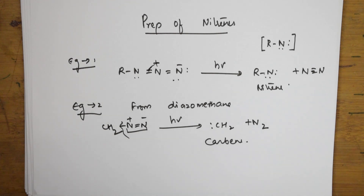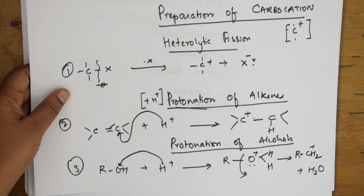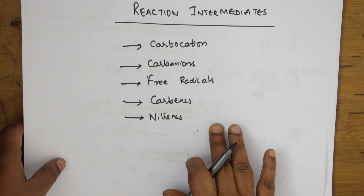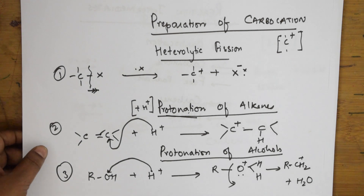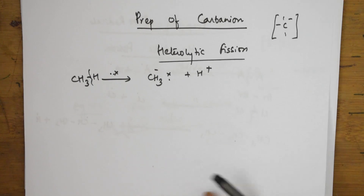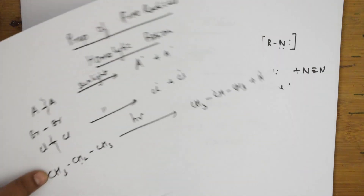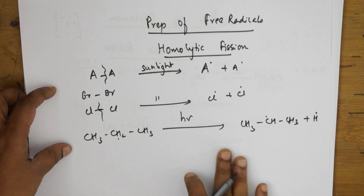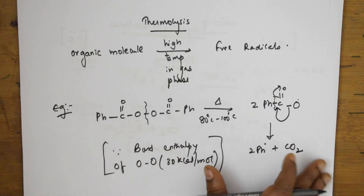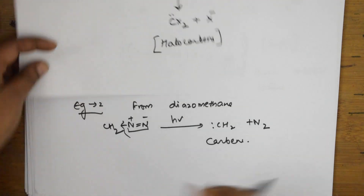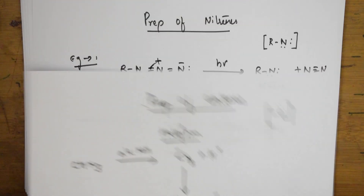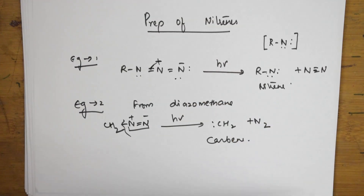So these are the different preparations students. Let me recap: first, I taught you what are the different reaction intermediates. Then we saw the preparation of carbocation, followed by carbanion. After that, free radicals — with two preparations: homolytic fission and thermolysis. Then carbene — with two preparations: haloform reaction and from diazomethane. And the last reaction intermediate, nitrene — prepared from alkyl azides. We are done with the preparations of reaction intermediates. I will meet you again in the next video with the structures of reaction intermediates. Thank you for watching.